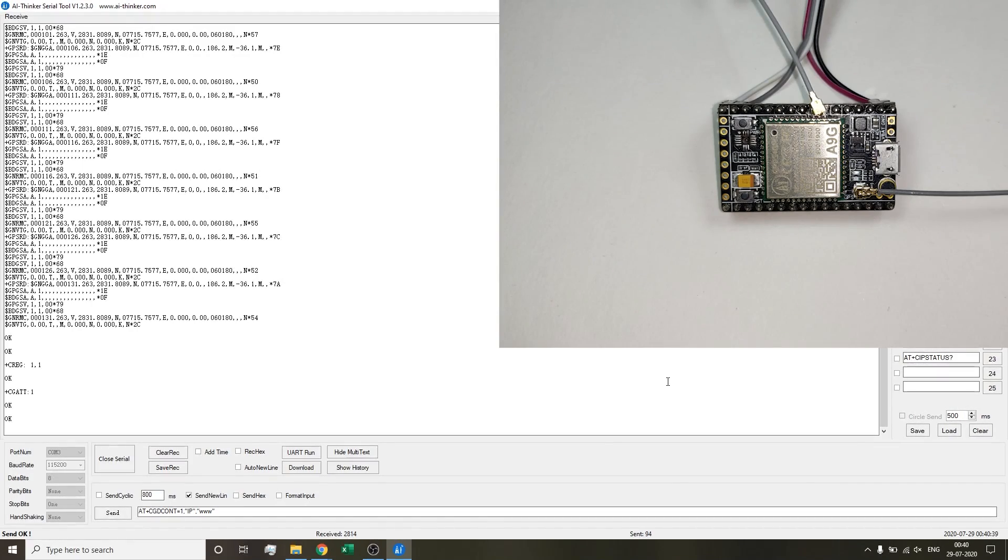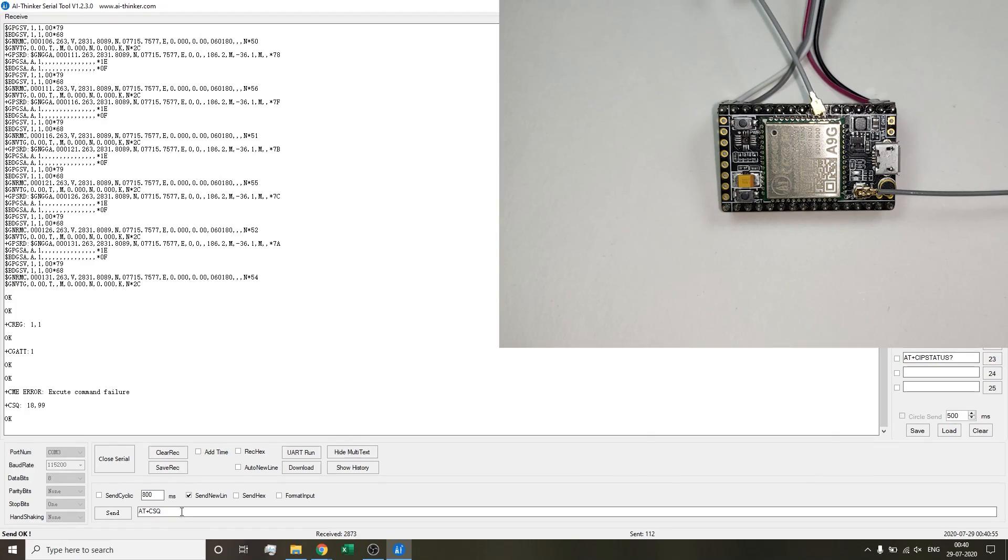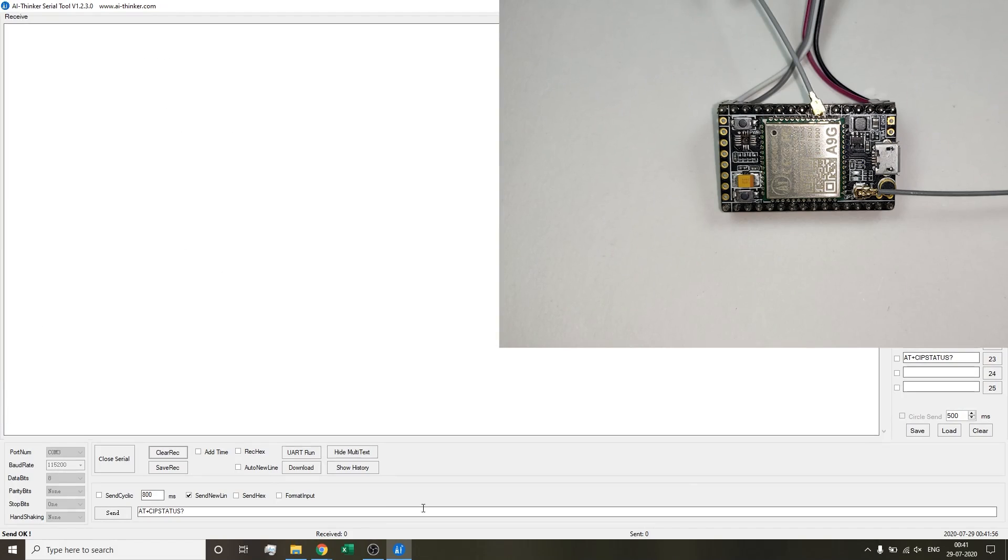The AT+CSQ command tells what type of network strength we are facing. The first number, the higher it is, the better your network connection is. Once you're connected to the internet, you can send the query AT+CIPSTATUS to know if the IP is connected or not. It says IP initial right now, which is a good sign. It should not say closed or unavailable.